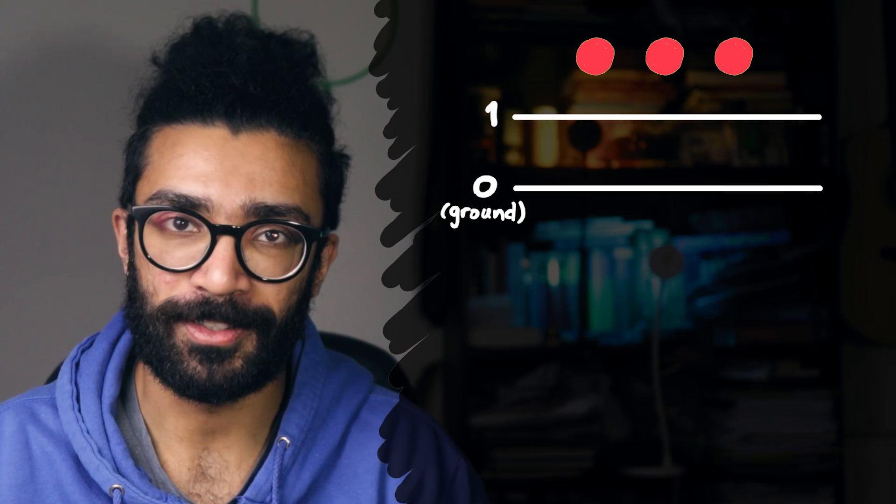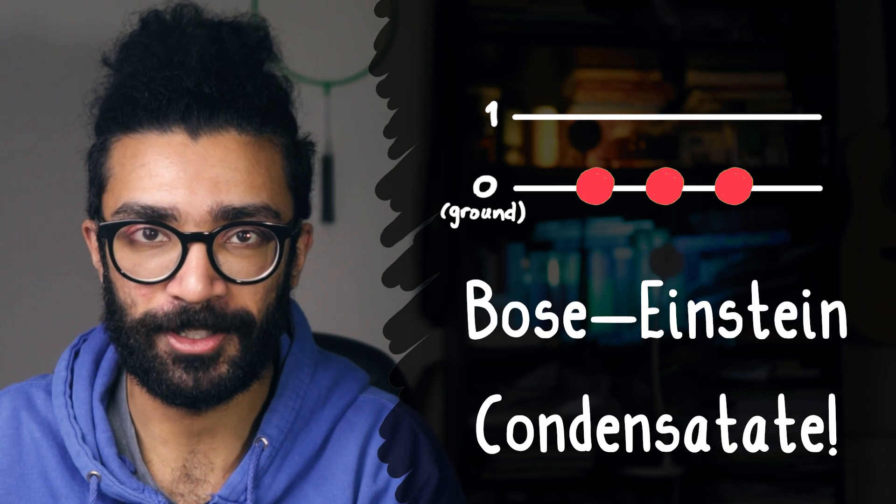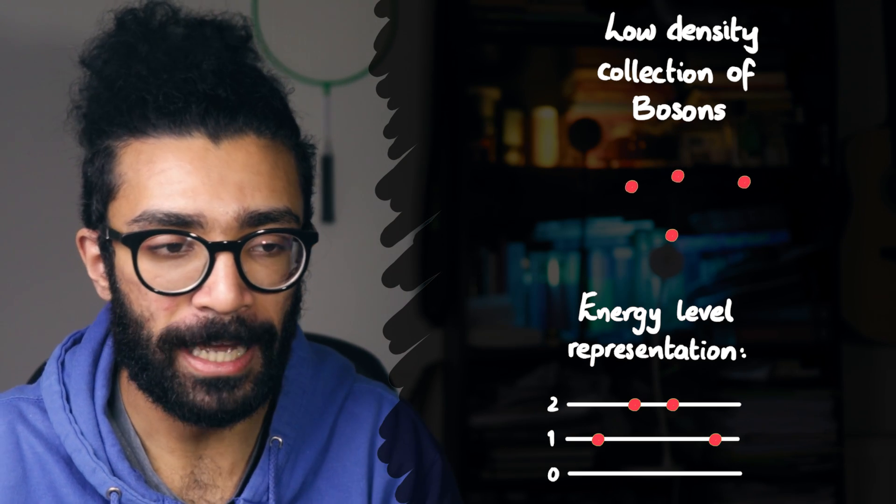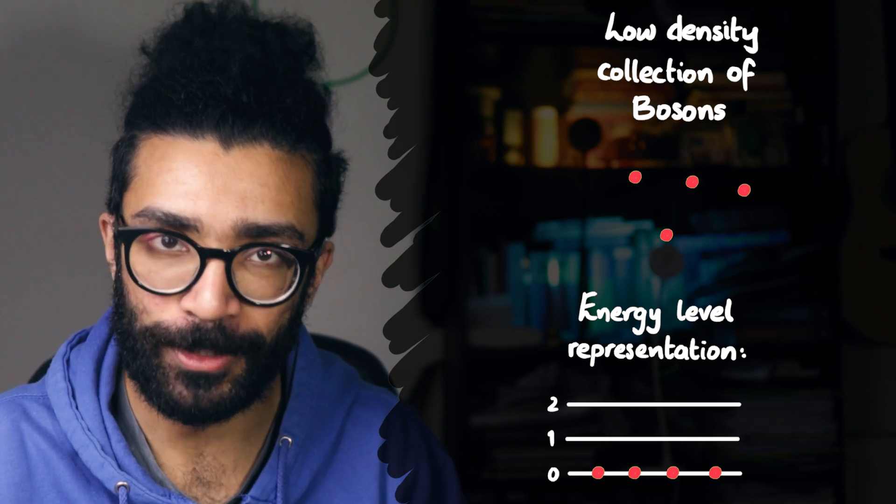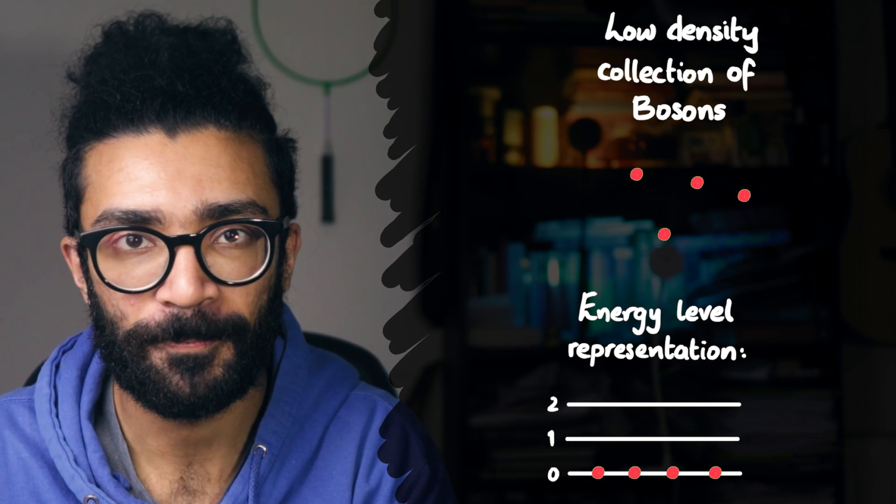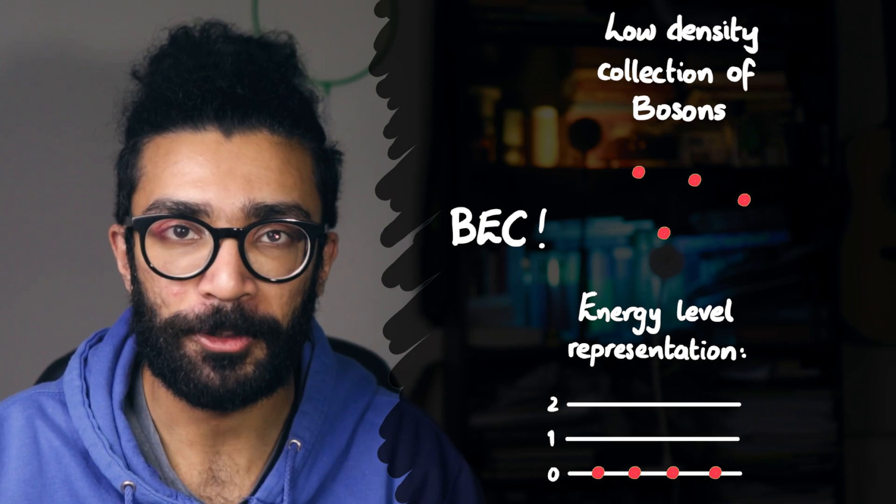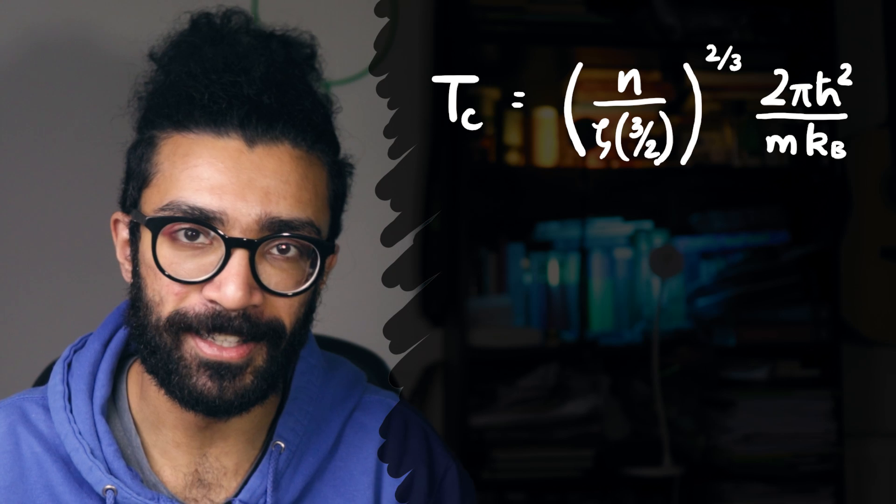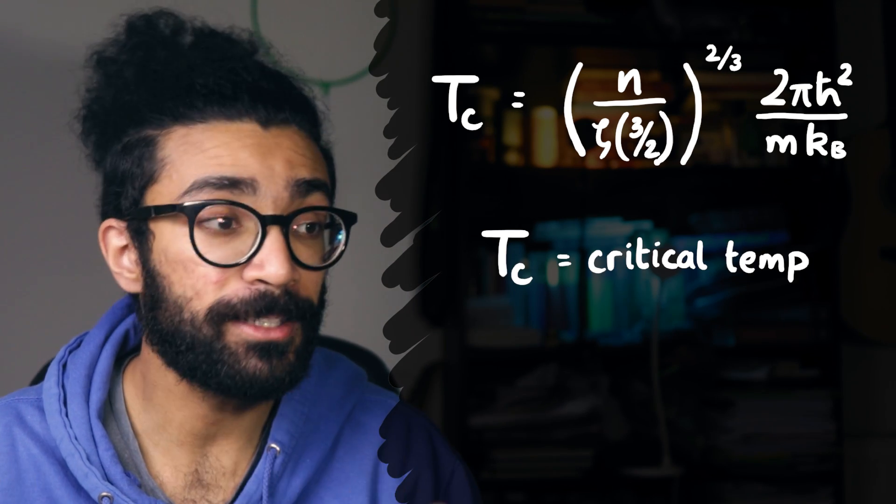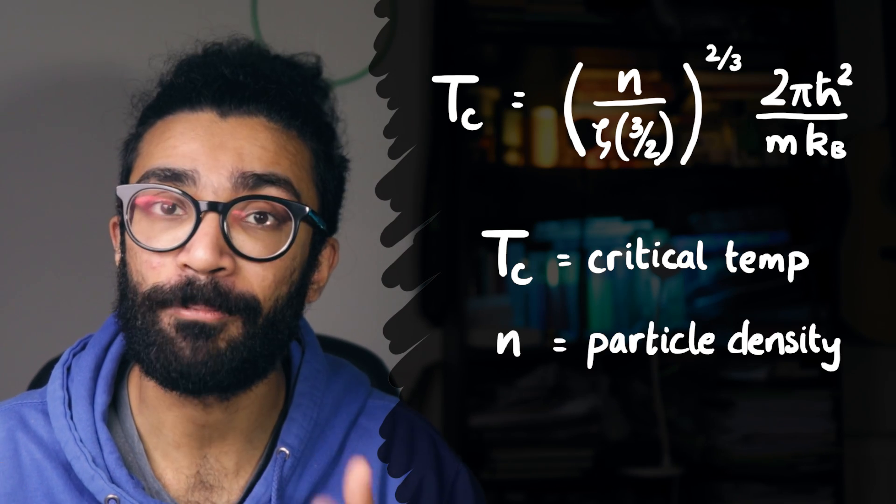But if we return back to our bosons then, the fact that they can all occupy the same energy level is what allows Bose-Einstein condensation to occur. Usually when we have a fairly low density gas made up of bosons, and we cool it to a sufficiently low temperature, all of these bosons will collapse down into one energy level, usually the lowest energy level. And this is a Bose-Einstein condensate. Now the temperature below which our gas of bosons becomes a Bose-Einstein condensate is given by this equation here. Tc is the critical temperature below which we'll have a Bose-Einstein condensate, and it depends on a couple of different things, like the number density of the bosons in our boson gas, and the mass of the bosons.